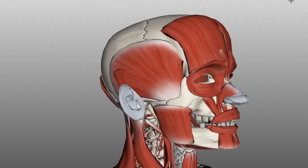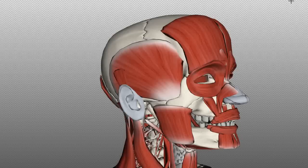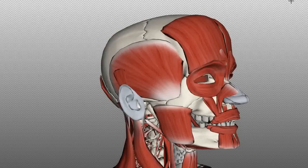This is a tutorial on the muscles of mastication. The muscles of mastication are innervated by the trigeminal nerve — specifically the mandibular branch of the trigeminal nerve, which is V3. When you're testing the trigeminal nerve, you're testing muscles of mastication and facial sensation. The muscles of mastication are innervated by V3, whereas the muscles of facial expression are innervated by the facial nerve, cranial nerve 7. The trigeminal nerve is cranial nerve 5.